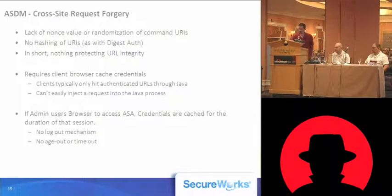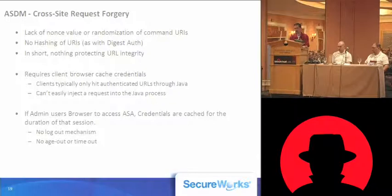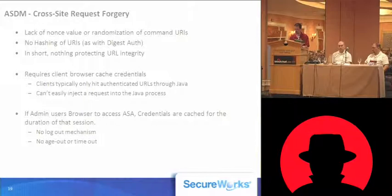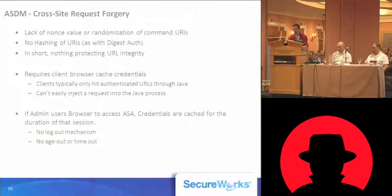To exploit cross-site request forgery, the client would have to have hit the ASA through a browser and authenticated. This isn't something that's done frequently — most people will navigate to it, download the Java client, and authenticate through Java. So the browser may not have cached credentials often. But if an admin user browses using a normal web browser, the browser will cache those credentials. There's no logout mechanism, no age-out or timeout — as long as that browser process is running, those credentials are going to be cached on the client.